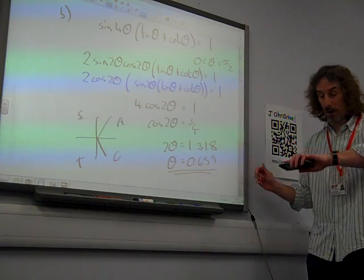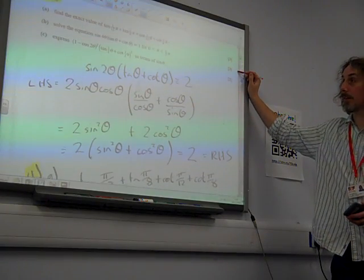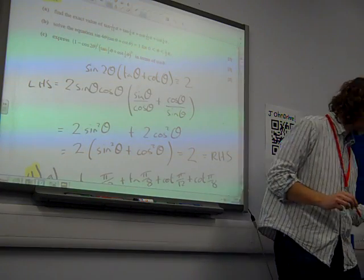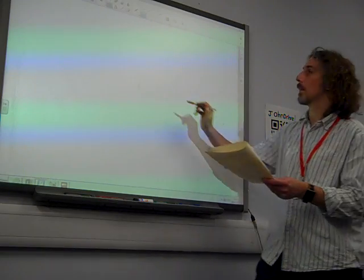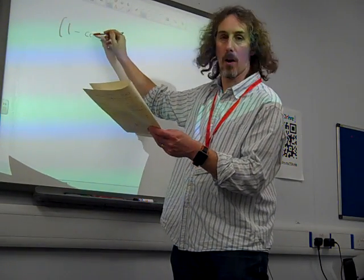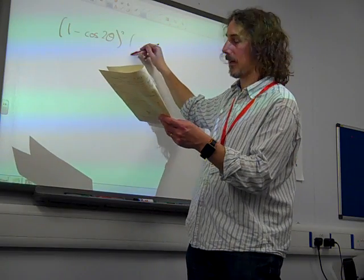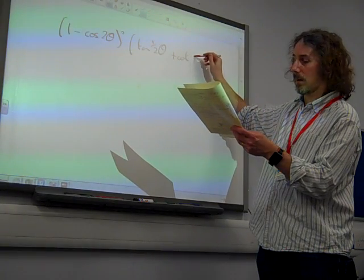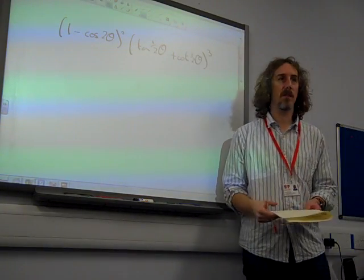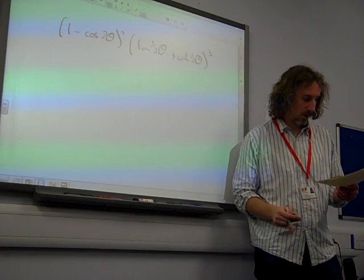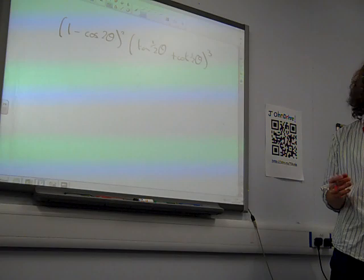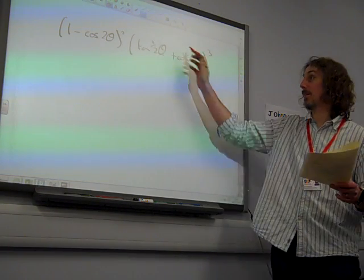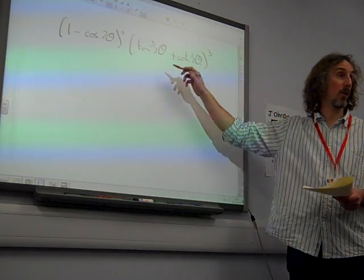And we've just got time, we've just got time to do the final part. Express that unpleasant looking thing in terms of sine theta. I'm going to write it on the next page: 1 minus cos 2 theta squared tan 1.5 theta plus cot 1.5 theta cubed in terms of sine theta. Right, well what can we do with our identities to help us? Bearing in mind that we'd quite like to get to this, to have something to do with sine times this. Sine theta times this would be lovely, because we could work with that.